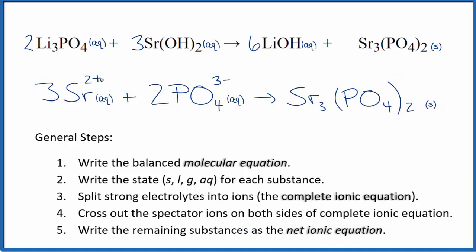You'll note charge is conserved. We have three times two plus, that's six plus, two times three minus, that's six minus. So that all adds up to zero, net charge of zero here in the reactants. Products, this is a neutral compound, net charge of zero. So charge is conserved. And if you count the atoms up, they'll be balanced as well.